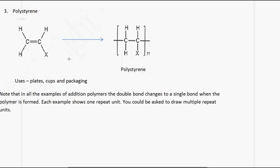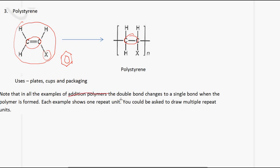The third example we are going to look at is polystyrene. This is the monomer, and this X represents a benzene ring. At the CSEC level, you don't need to know about the benzene ring, so that's why we represent it with an X. The key thing to note is that again the double bond disappears and becomes a single bond. In all examples of addition polymers, the double bond changes into a single bond when the polymer is formed.